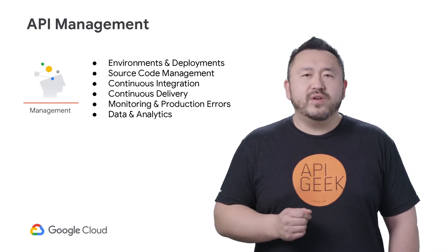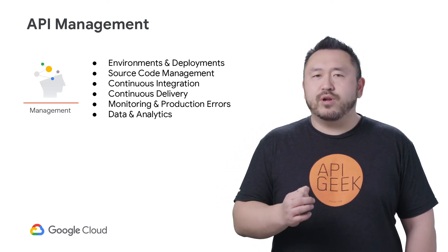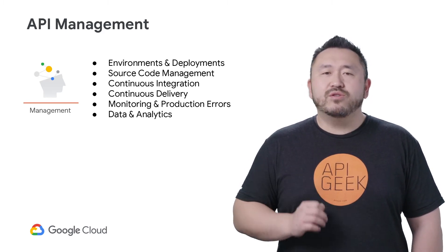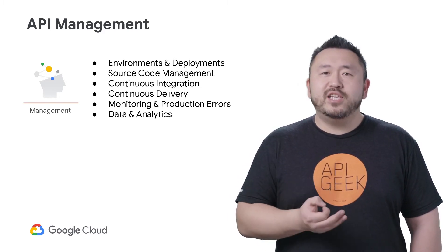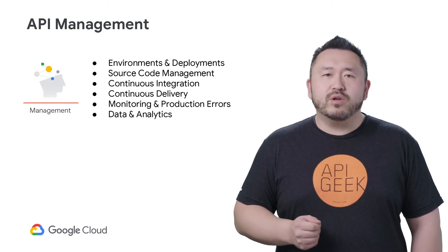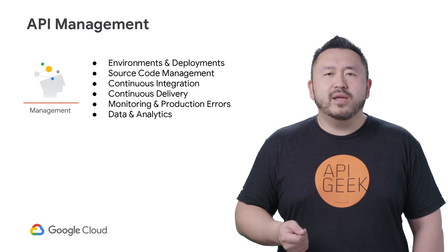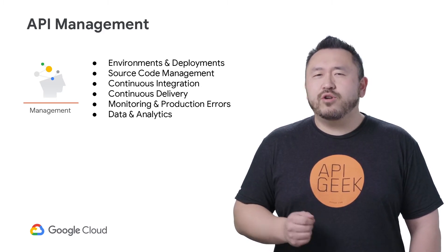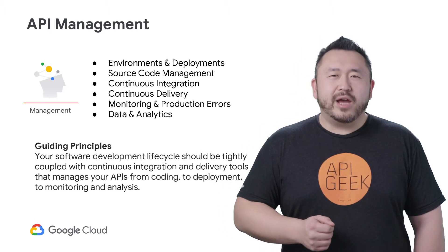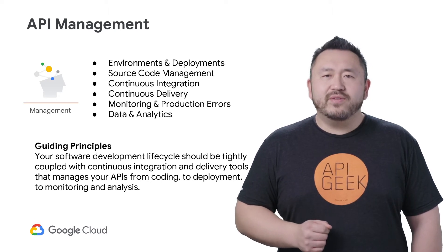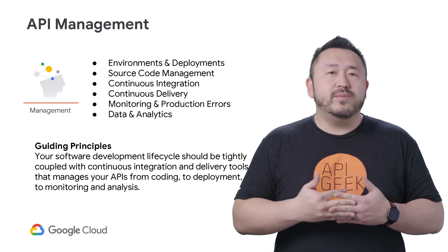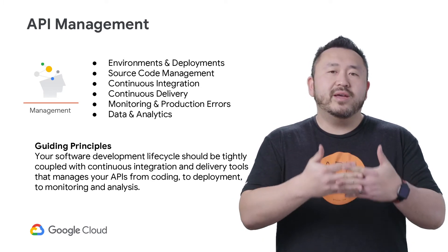In this section, we detail the configurations necessary for a successful pathway to production. It should outline each step of your continuous integration and delivery process and the tools used. Furthermore, it should list each environment and what that environment is used for. You can also include lists of analytics reports that will help support auditing, governance, marketing, and ongoing development. You should also include steps to prepare technical and non-technical documentation for the developer portal. Your guiding principle here is that your software development lifecycle should be tightly coupled with continuous integration and delivery tools that manage your APIs from coding to deployment to monitoring and analysis.